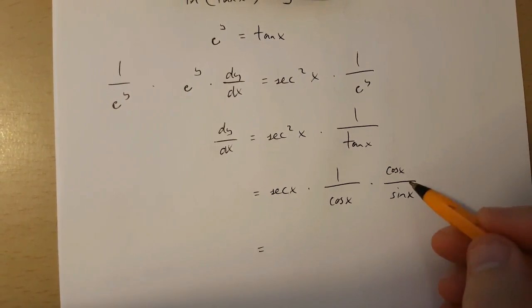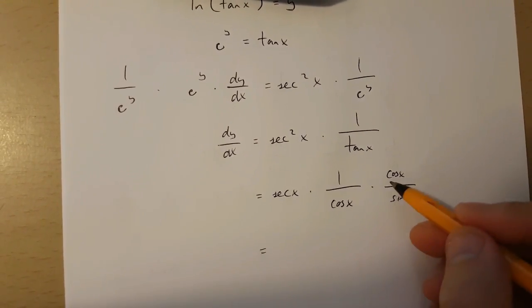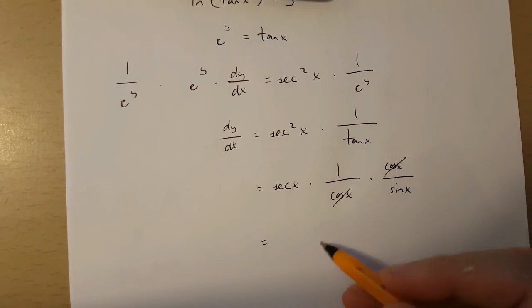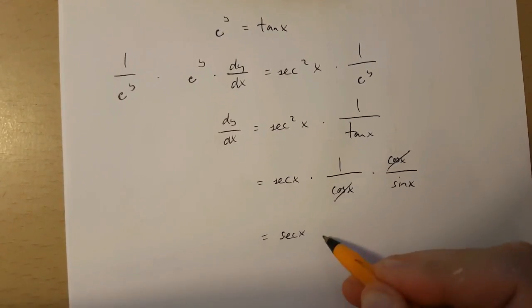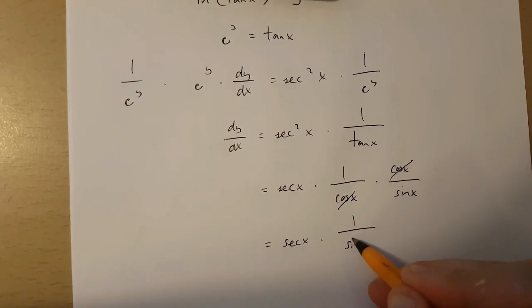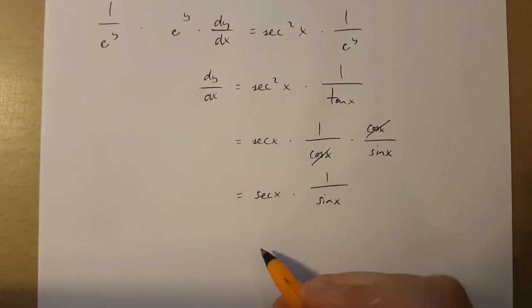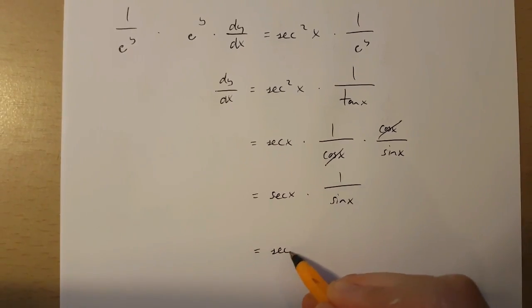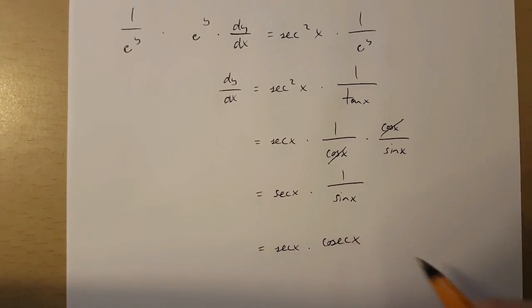Because we've got a cos x over here and one down here, they cancel each other out. And what we get is sec x times 1 over sin x, which is in fact sec x times cos x.